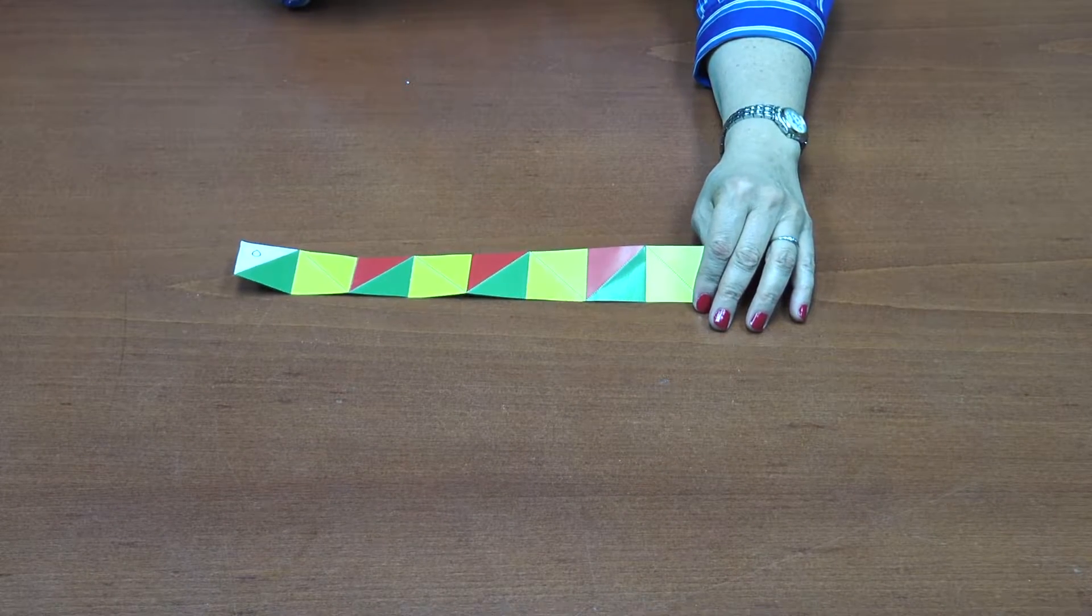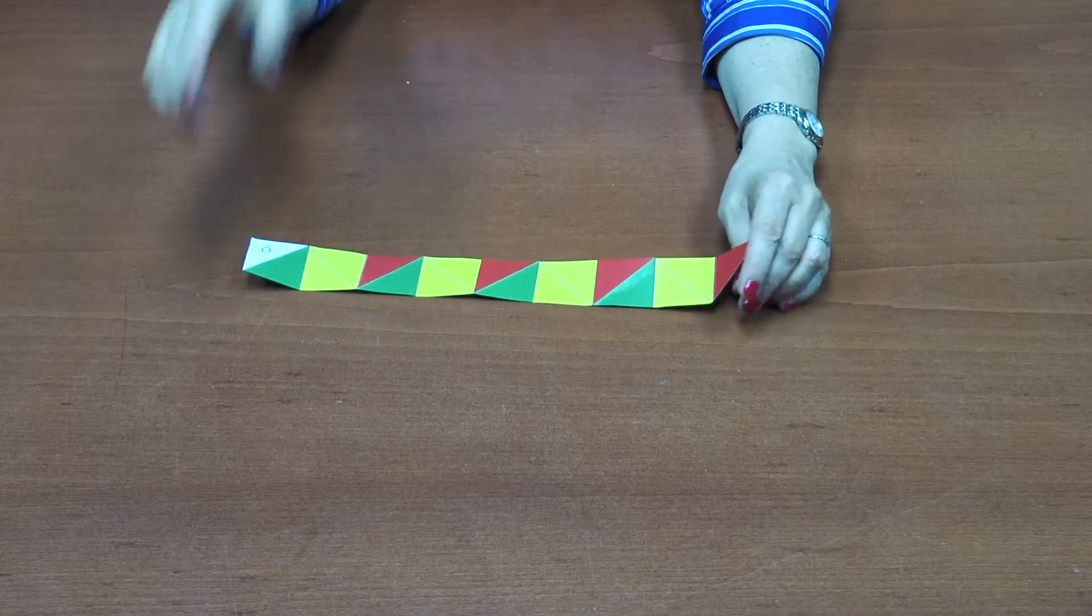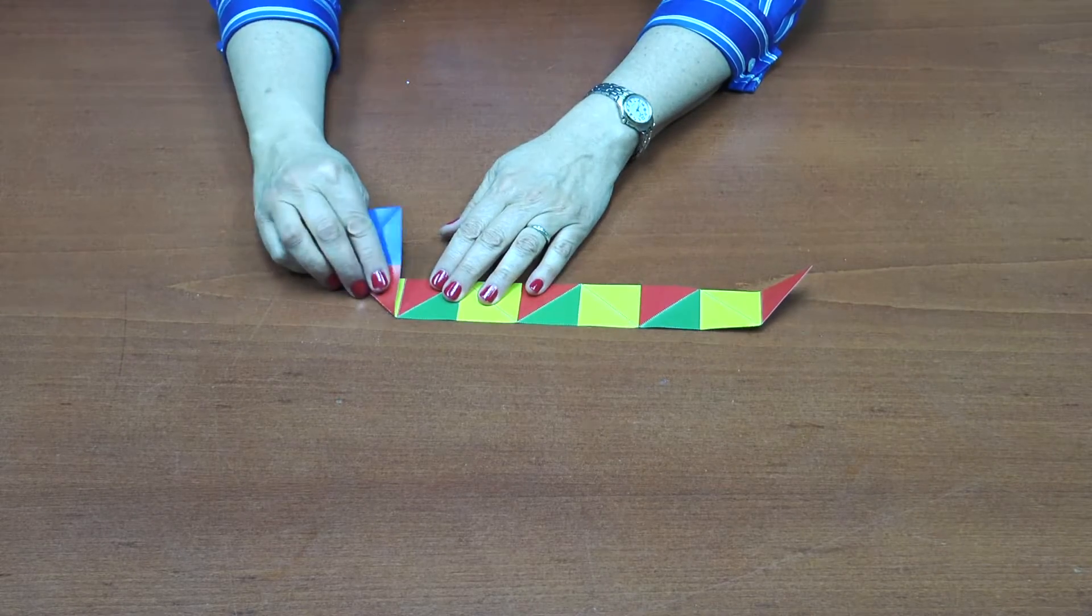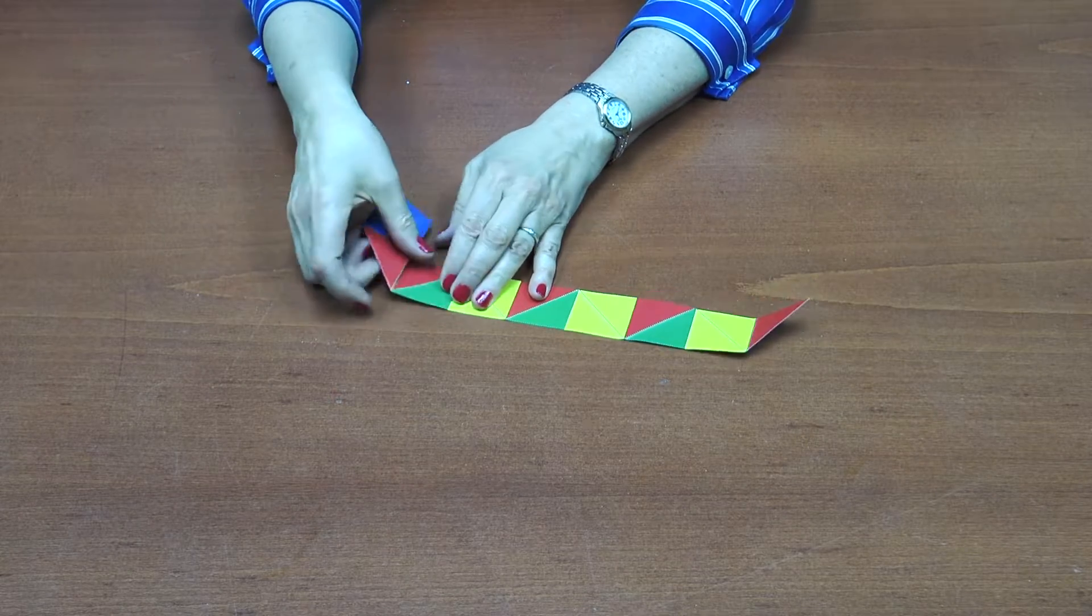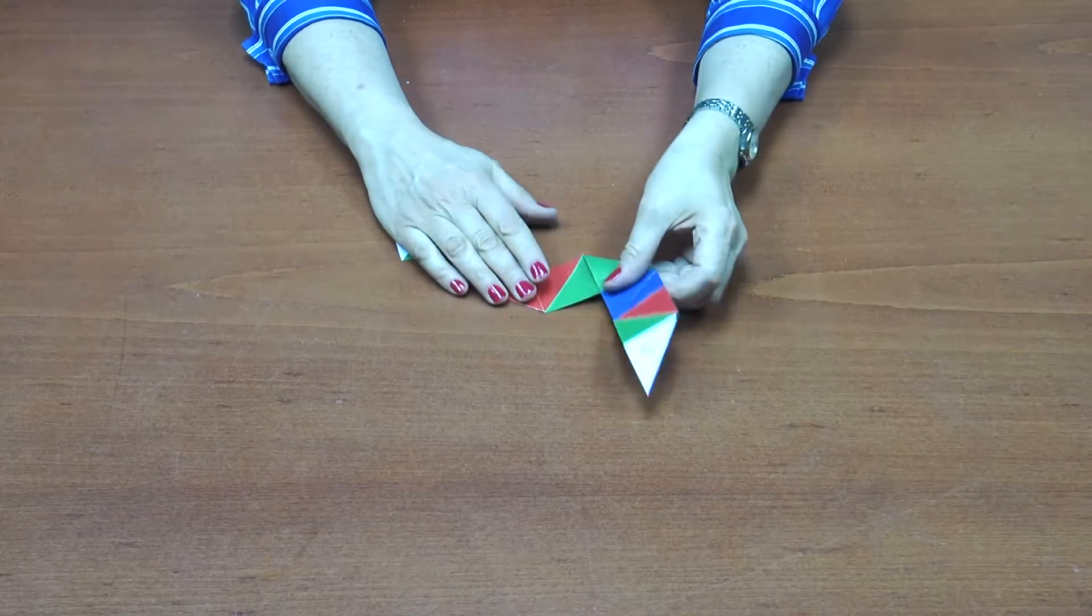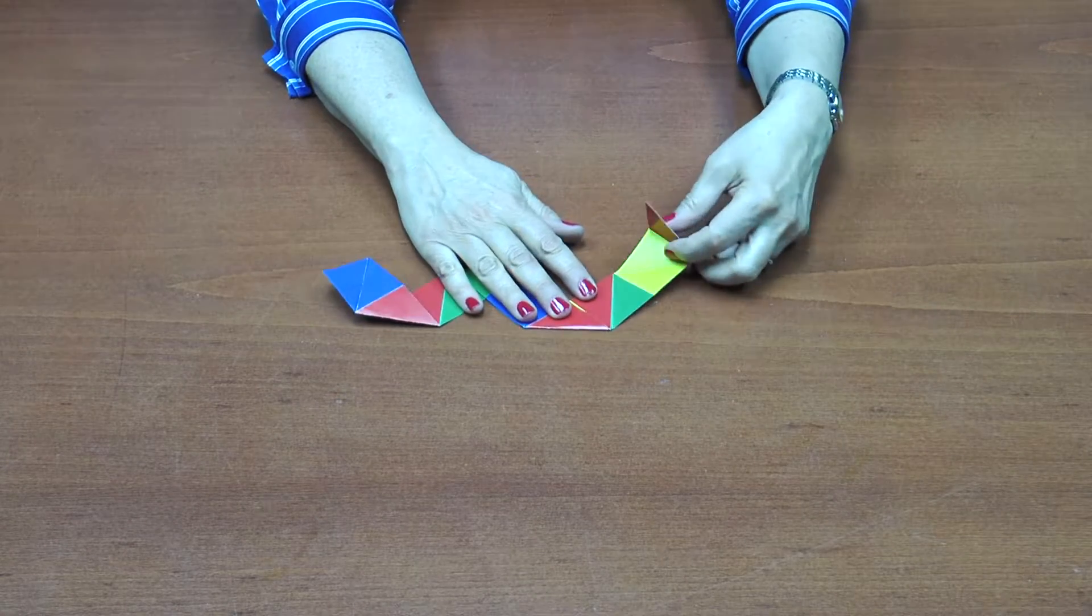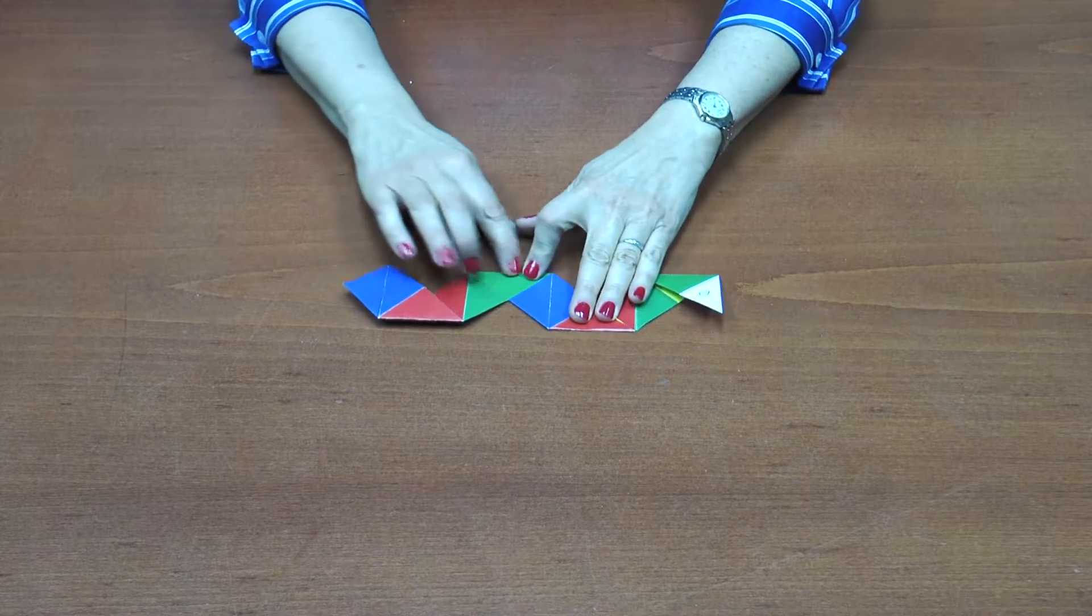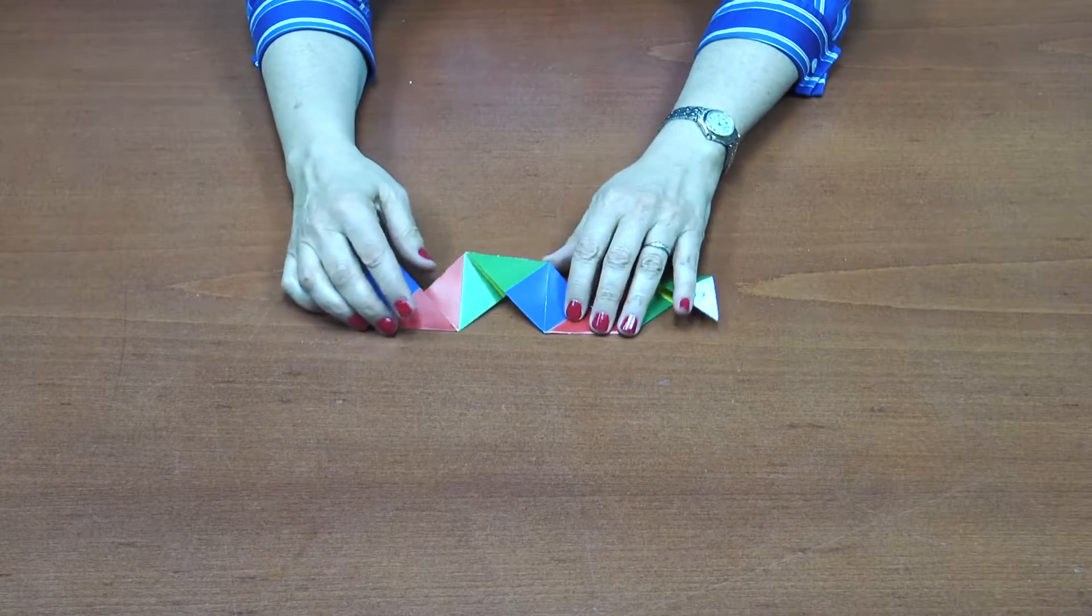All right, now I'm going to fold the adjacent triangles of the same color on top of each other. So that's yellow on this side. You see we have a zigzag, which is very common when you're in the middle of folding something up.